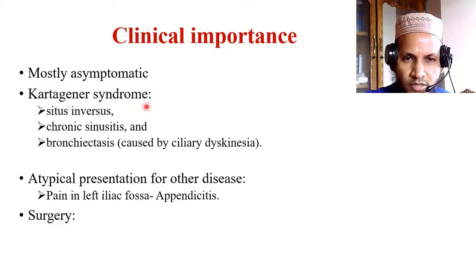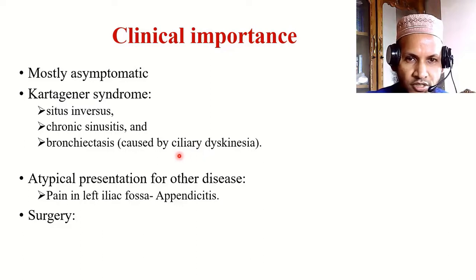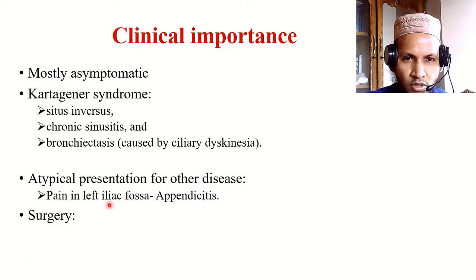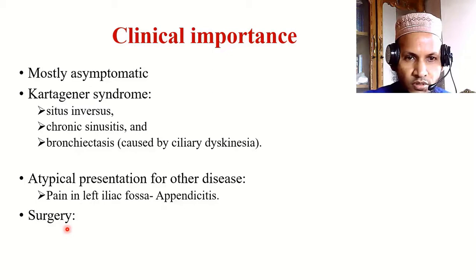Some congenital anomalies may be associated with dextrocardia. If it is associated with situs inversus, chronic sinusitis, and bronchiectasis, it is called Kartagener syndrome. This syndrome is caused by a genetic abnormality in ciliary motility — a ciliary dysfunction. Patients may also present atypically for some diseases due to abnormal position of the viscera. For example, a patient of appendicitis normally presents with pain in the right iliac fossa, but with situs inversus may present with pain in the left iliac fossa.